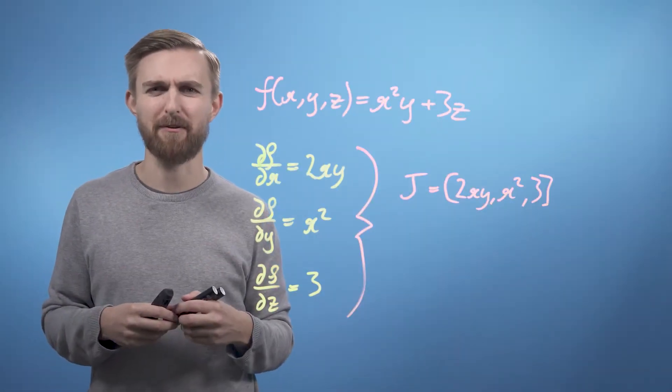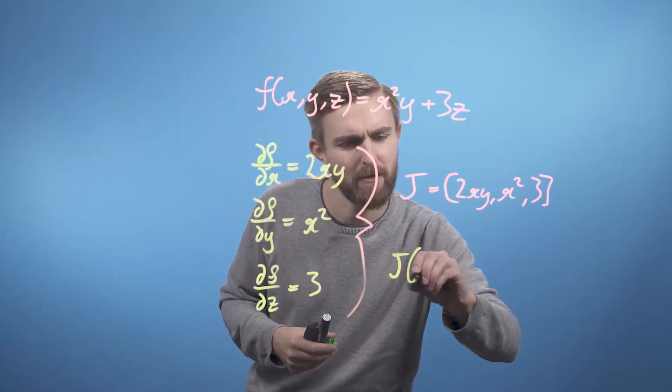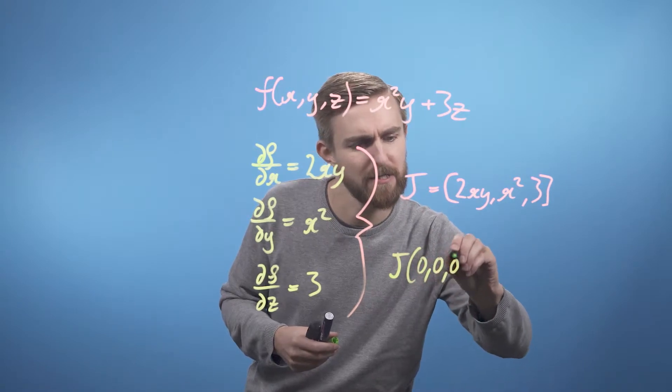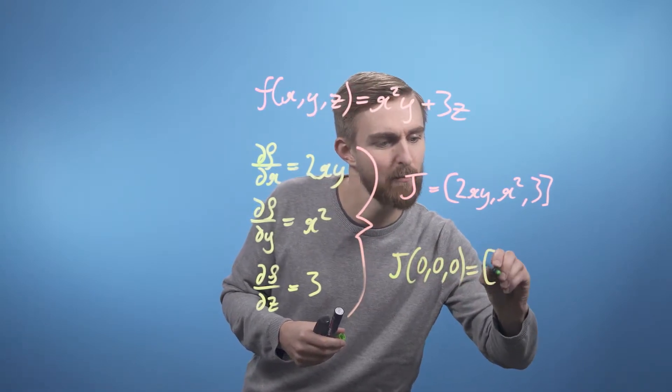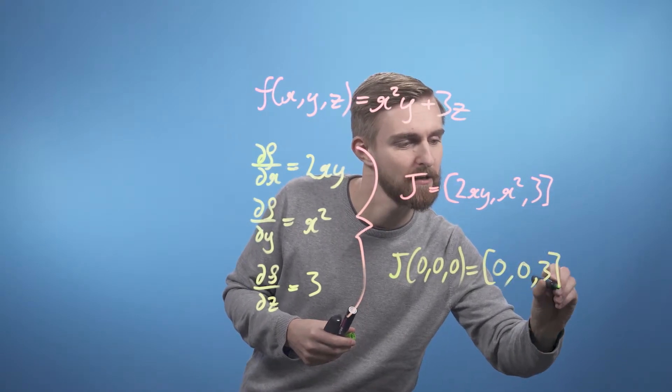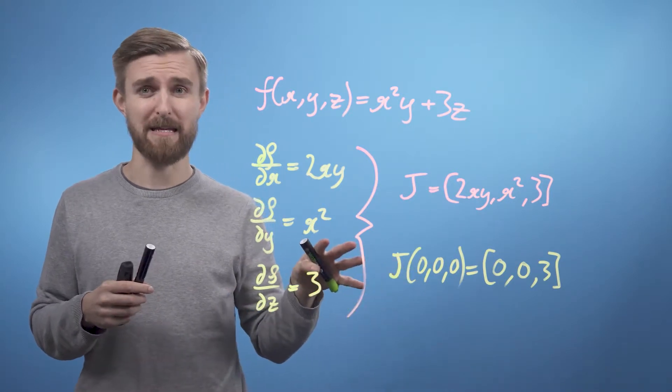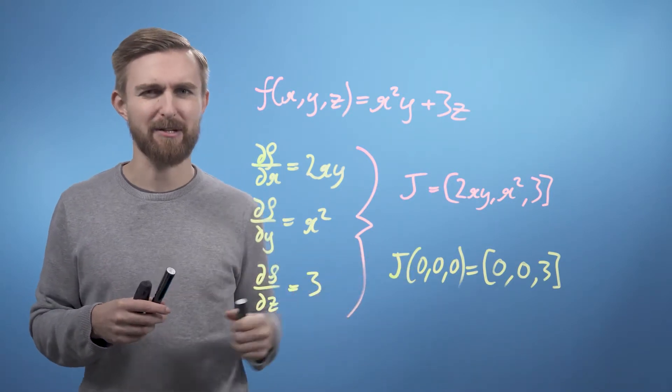For example, at the point (0, 0, 0), we can see that our Jacobian is just going to be J(0, 0, 0) is just going to be [0, 0, 3]. So we can see that our Jacobian is a vector of length 3 pointing directly in the z direction.